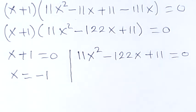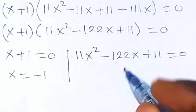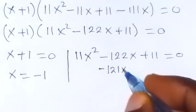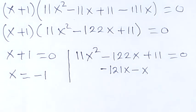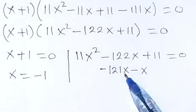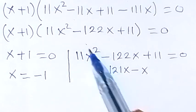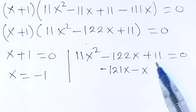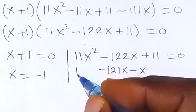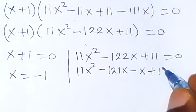For the quadratic, we solve by factoring. We rewrite minus 122x as minus 121x minus x, since that gives minus 122, and multiplying the split terms gives 121x squared, matching 11 × 11 = 121.